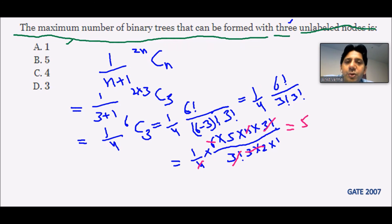So for this one it is becoming 5. It is saying that the maximum number of binary trees which are possible is 5. So the correct answer is 5, and the correct option is B.